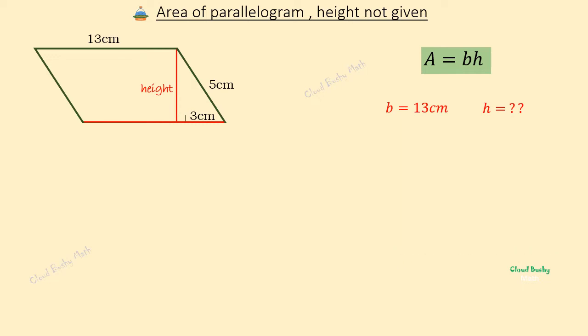Now we have 90 degrees here, which means this triangle is a right triangle, or a right-angled triangle. We are given that this length is 3 centimeters, and we know this hypotenuse to be 5 centimeters.